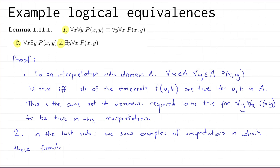The example we had was: it's not true that there exists a natural number y such that for all natural numbers x, y is bigger than x; but it is true that for all natural numbers x, there exists a natural number y with y bigger than x. So that was an interpretation — making the domain the natural numbers and the relation P(x,y) meaning 'y is bigger than x' — in which those two first-order formulas had different truth values.